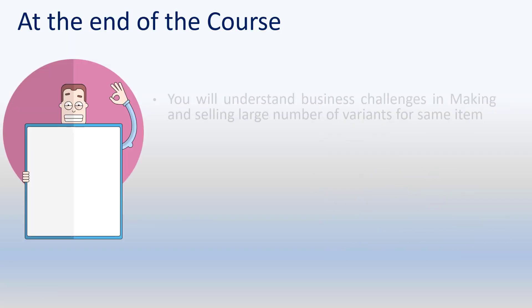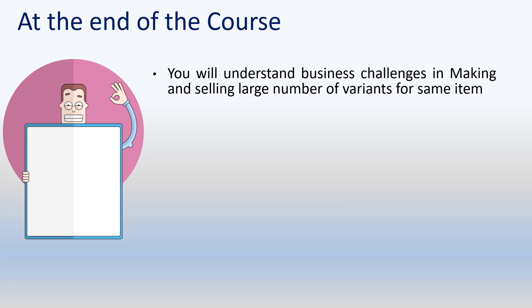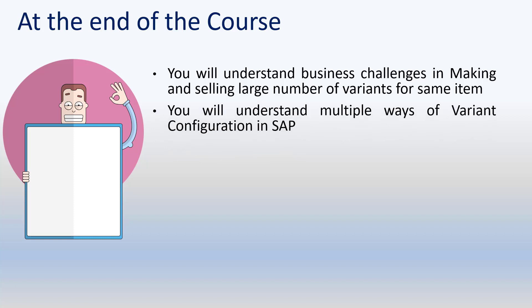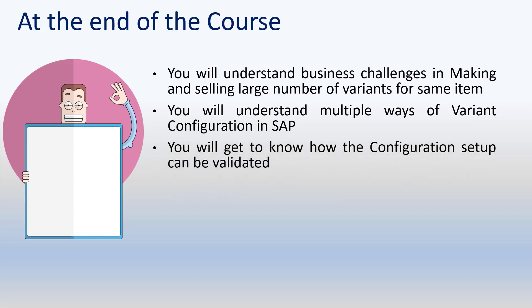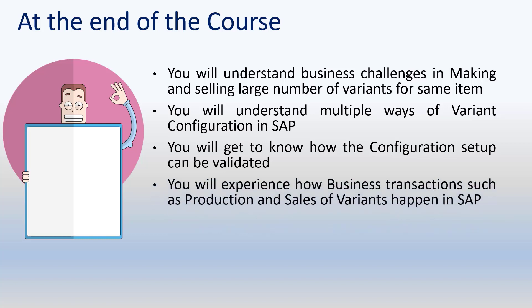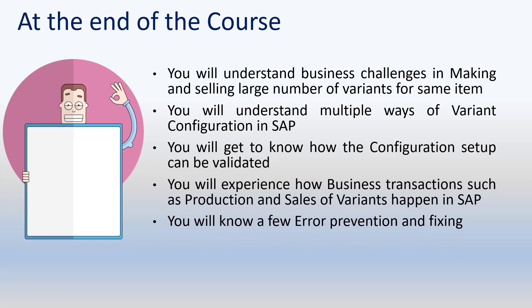At the end of this course, you will understand the business challenges in making and selling a large number of variants for the same product — that is, the challenges involved in a typical make-to-order environment. You will understand multiple ways of Variant Configuration offered in SAP S4 HANA, learn how the configuration setup is done and how it is validated, and experience how business transactions such as production and sales of configurable materials happen in SAP S4 HANA 2020. During the multiple demonstrations in SAP S4 HANA, you will also understand a few error prevention and fixing techniques.